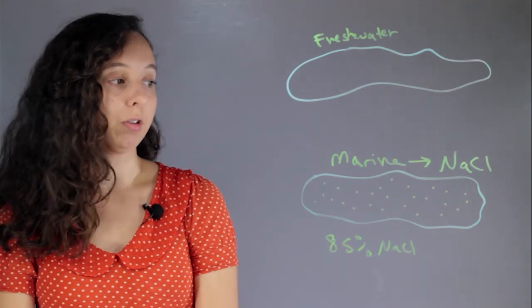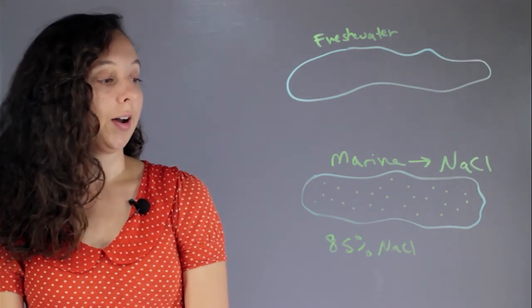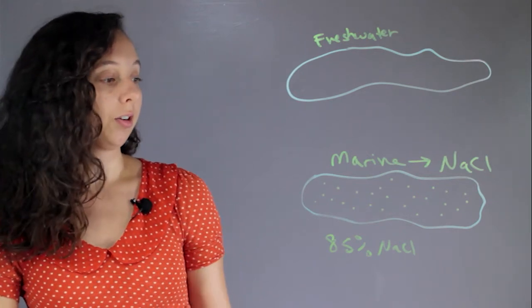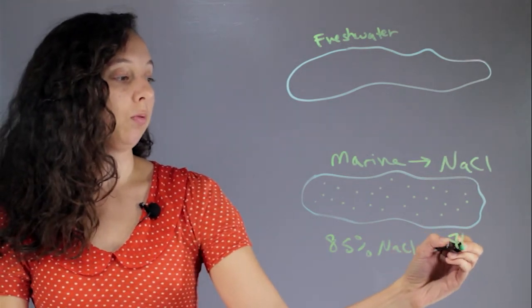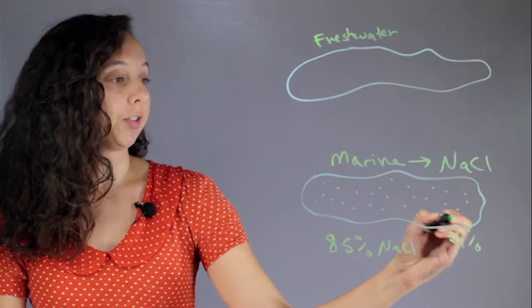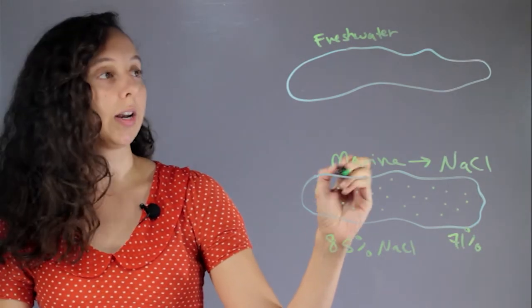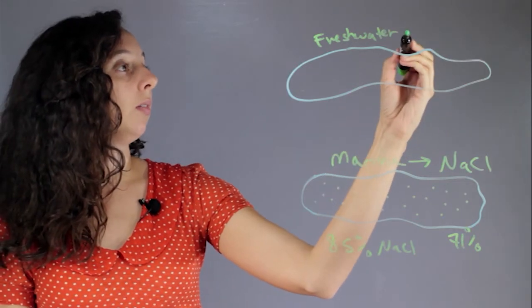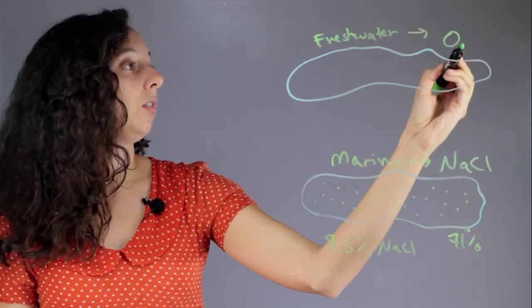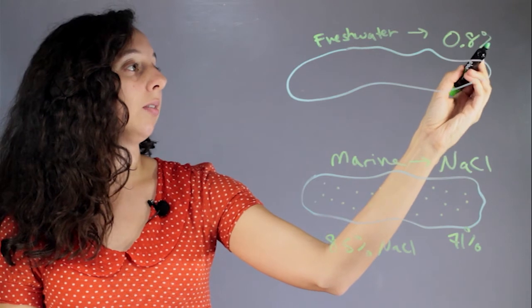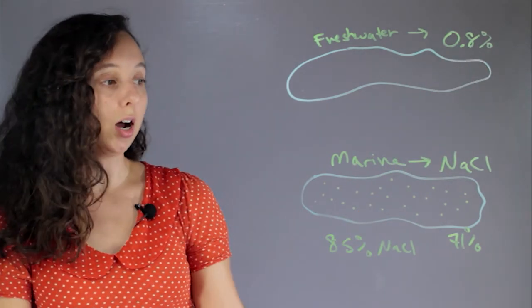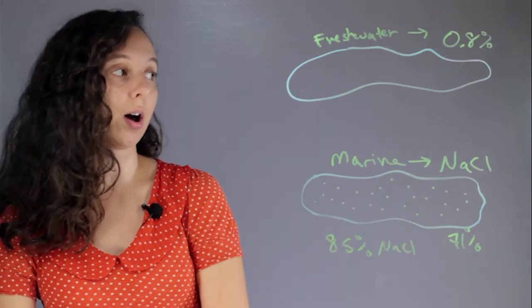And just to give a perspective of scale here, on the Earth's crust, 71% is because of marine aquatic ecosystems. And on freshwater, only 0.8% of the planet's surface is freshwater systems. So there's a ton more marine. We've got a lot more salty water than freshwater.